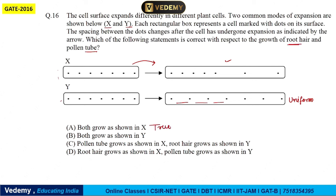Both grow as shown in X — yes, we can go with this. Both grow as shown in Y — no. Pollen tube grows as shown in X and root grows as shown in Y — also wrong. So we can say that A is the correct answer.